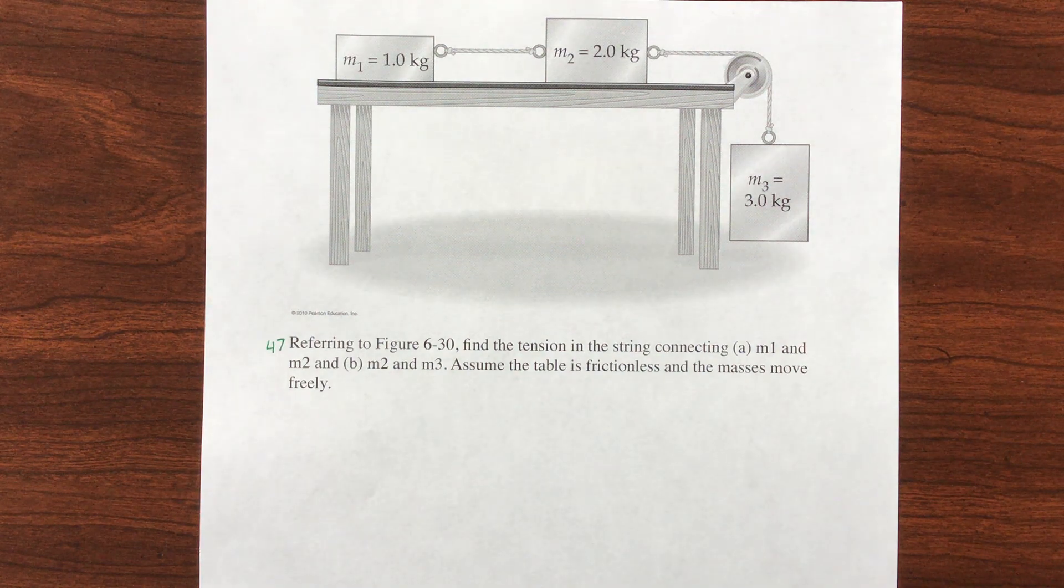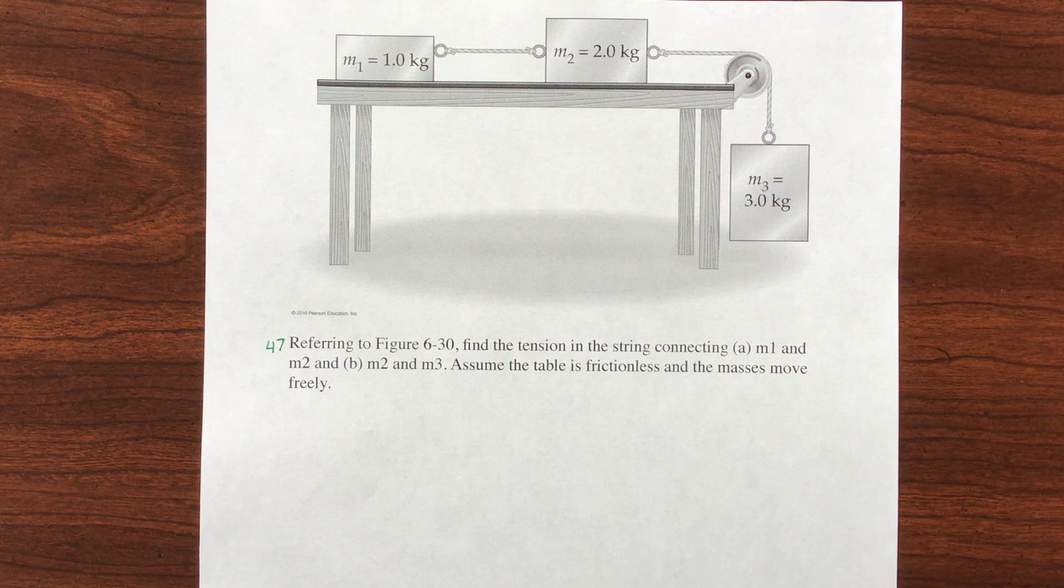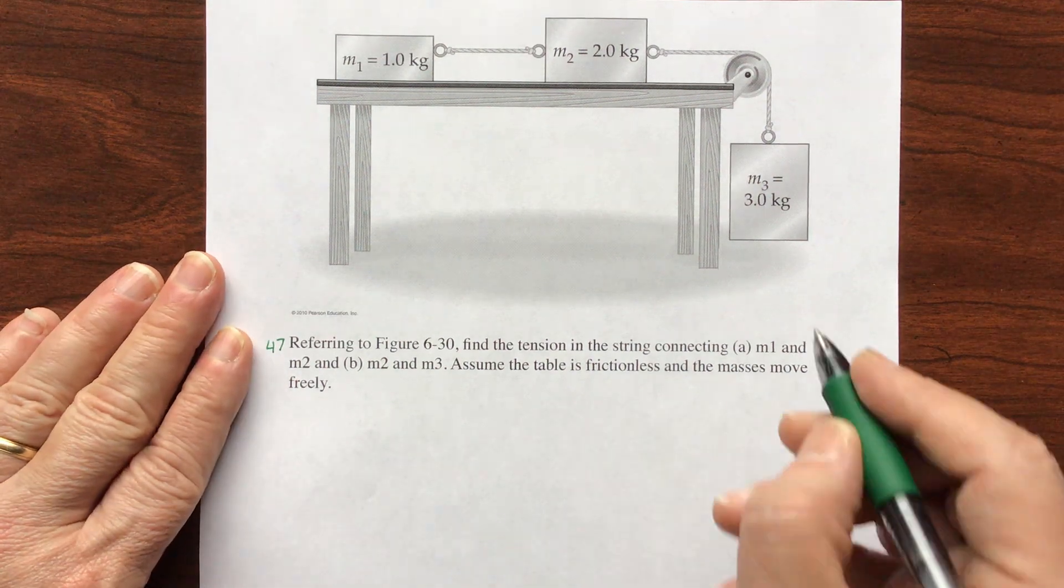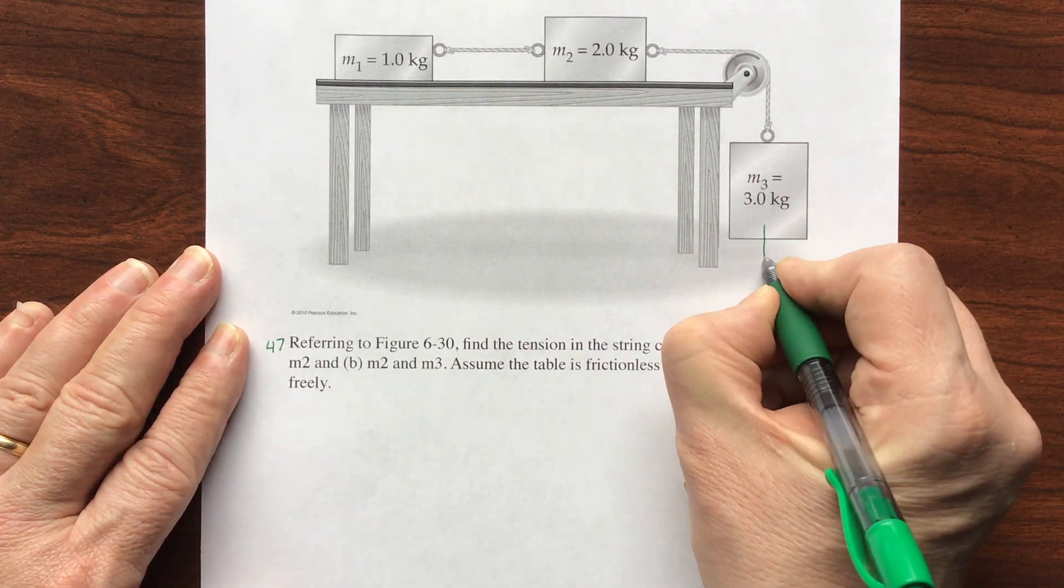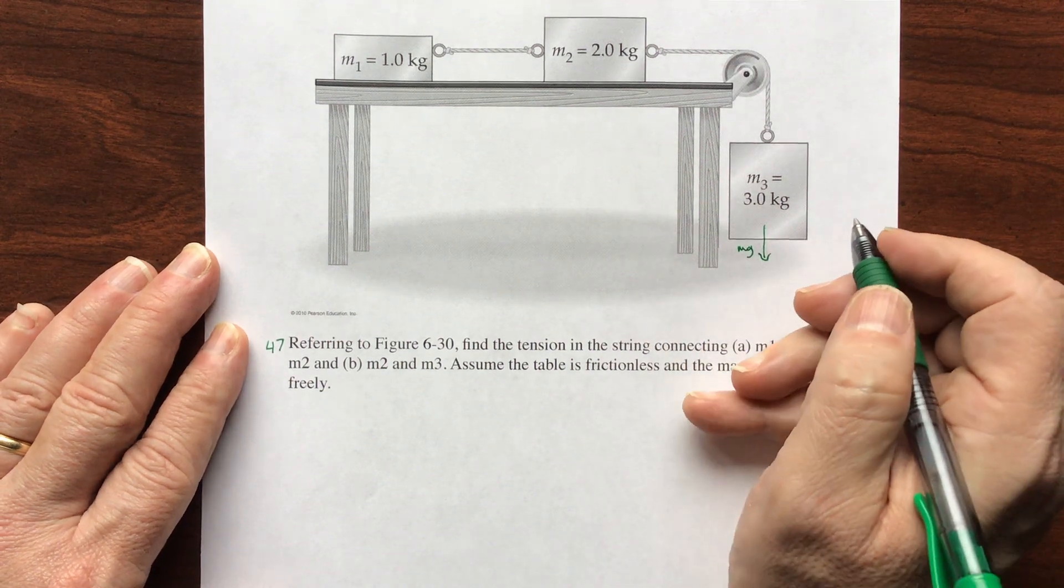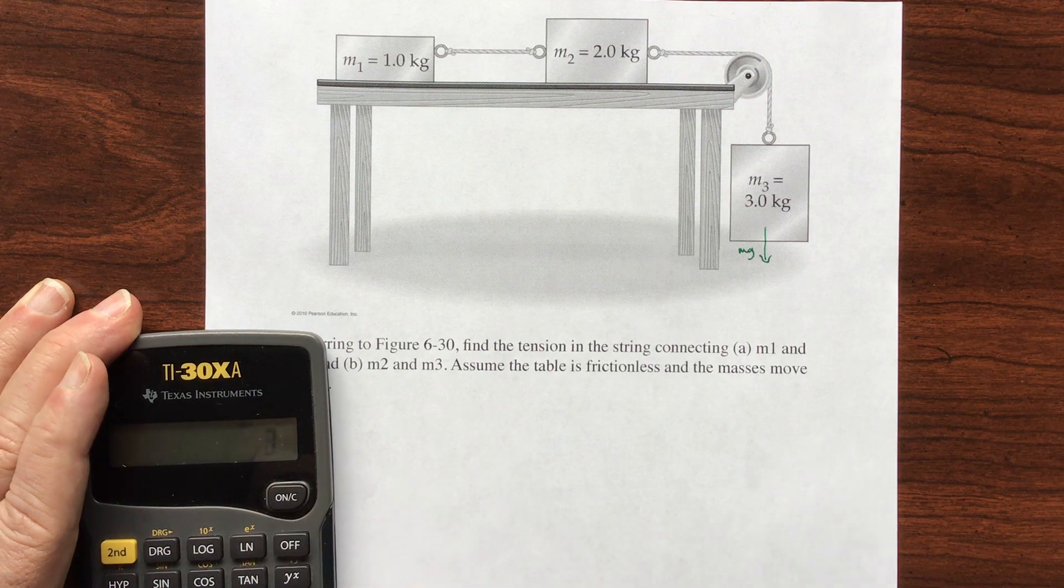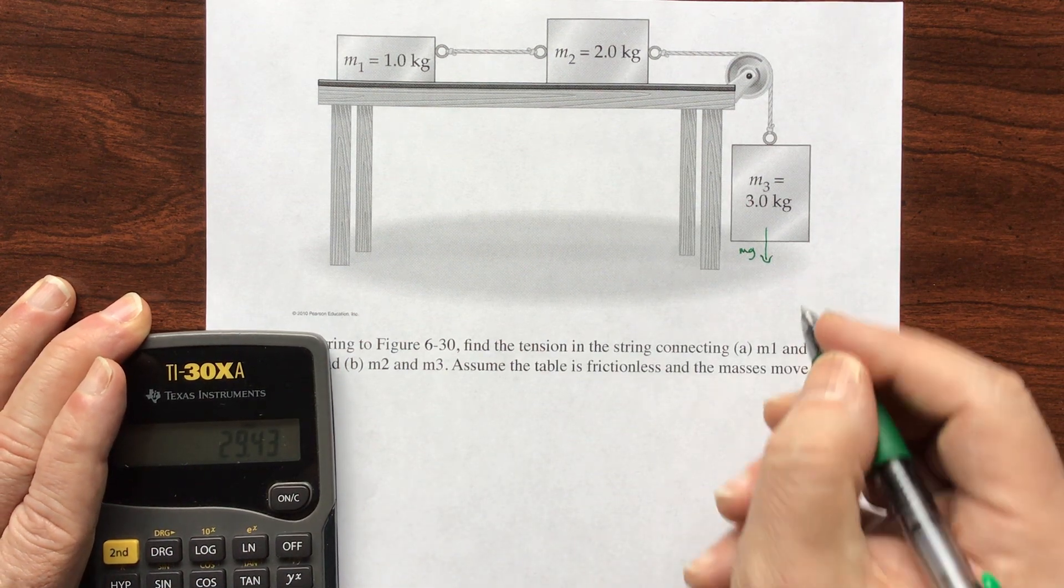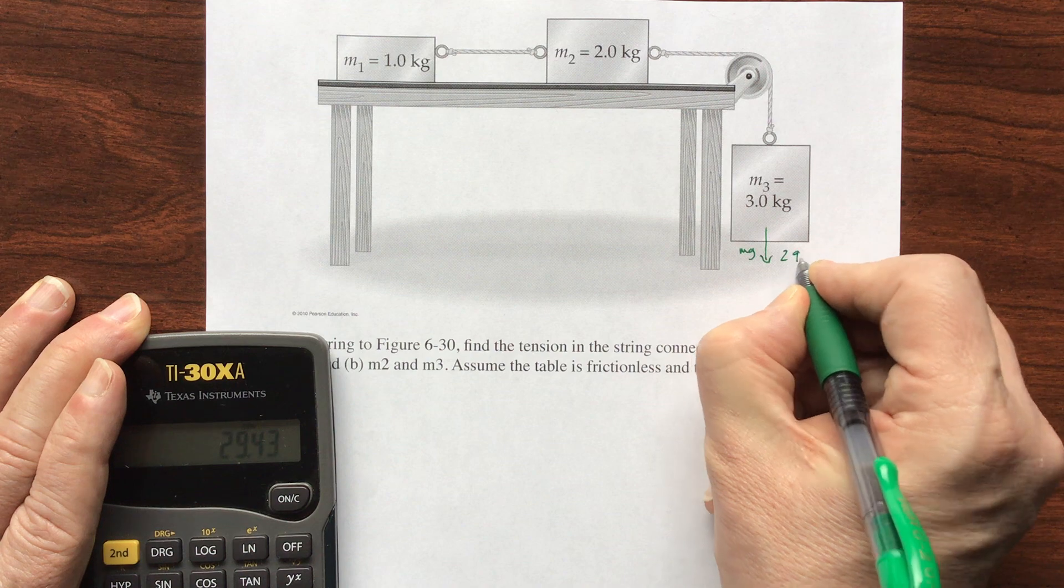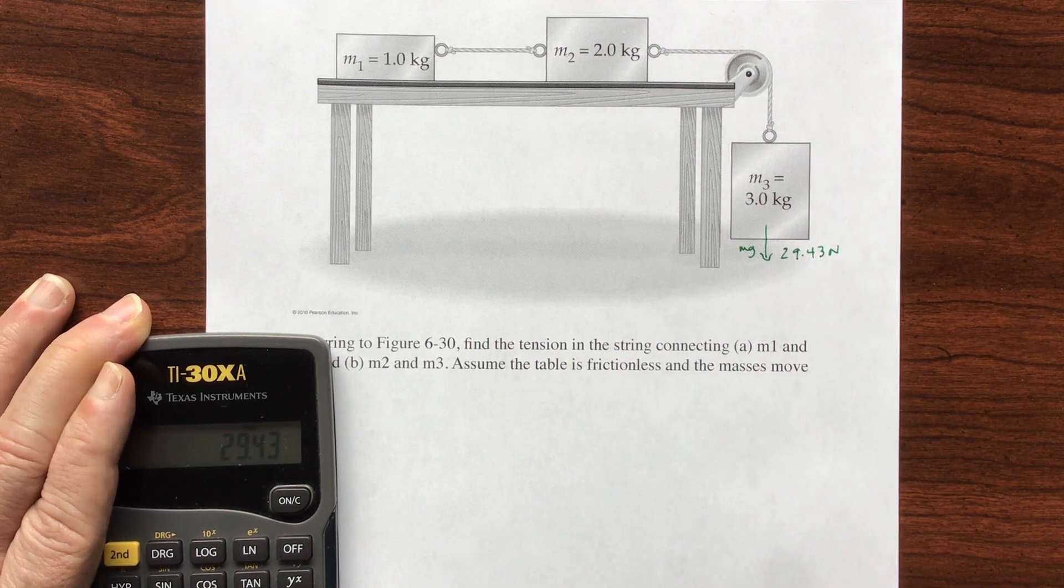All right, well, in that case, the only thing pulling us is the 3 kilogram mass. So let's find out what its force is that's pulling on the other strings. So this is going to be Mg. Mg is going to be 3 times 9.81 and I have that as 29.43 newtons.